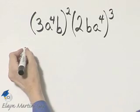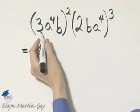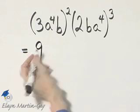Let's simplify this expression. Let's first take off these two sets of parentheses. Here we have 3 squared. That's 3 times 3, or 9.